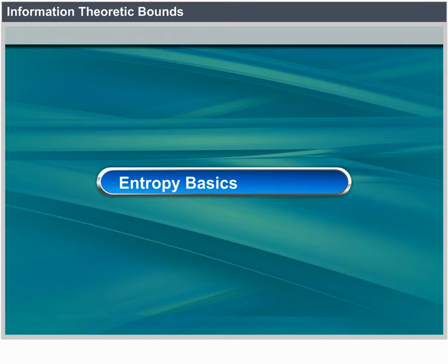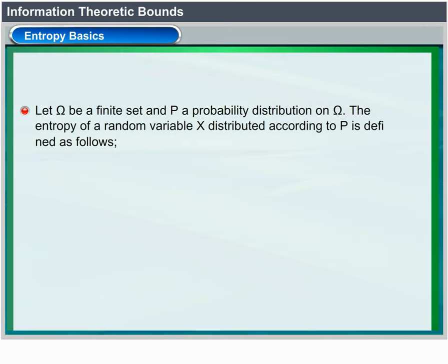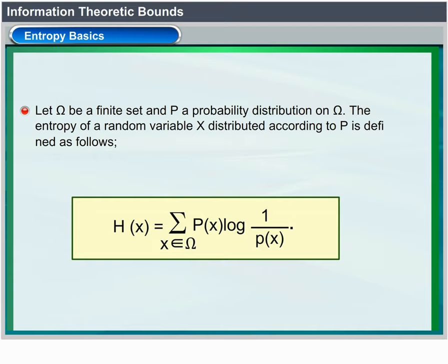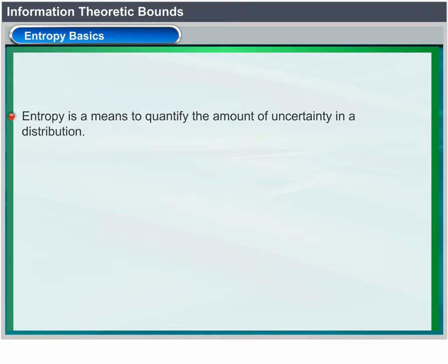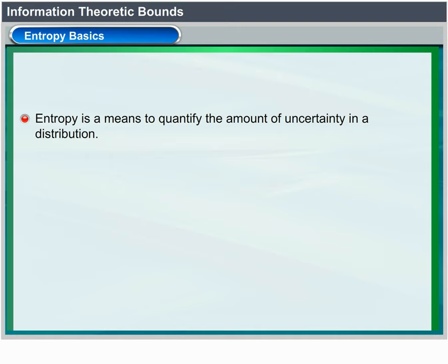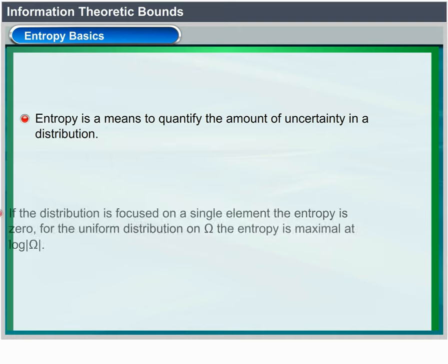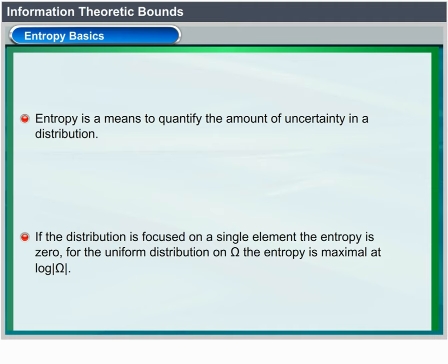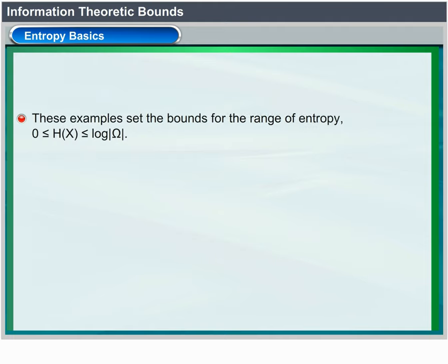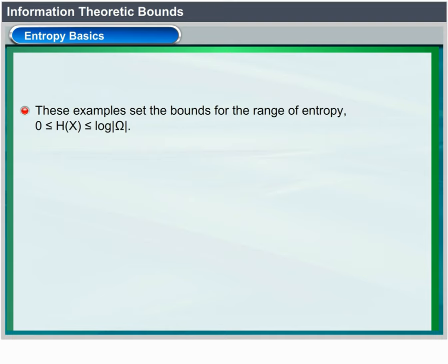Entropy basics: let Ω be a finite set and p a probability distribution on Ω. The entropy of a random variable X distributed according to p quantifies the amount of uncertainty in a distribution. If the distribution is focused on a single element, the entropy is zero. For the uniform distribution on Ω, the entropy is maximal at log|Ω|. Thus H(X) lies between 0 and log|Ω|.